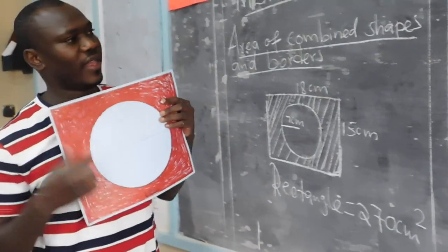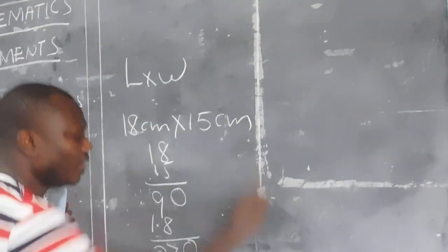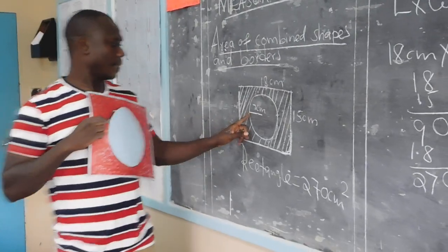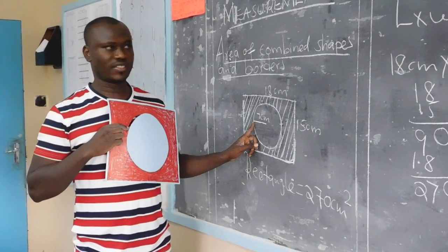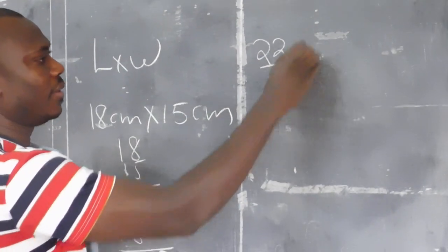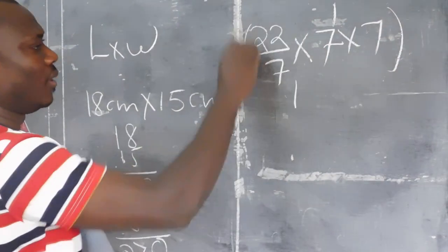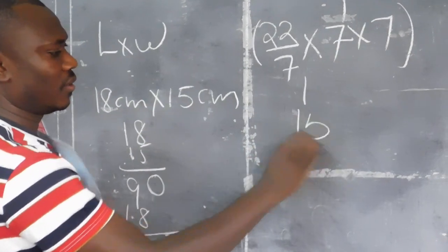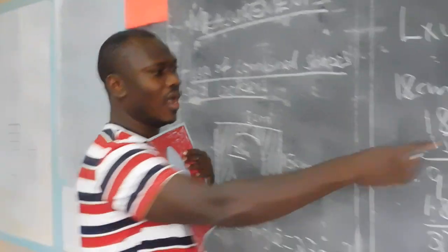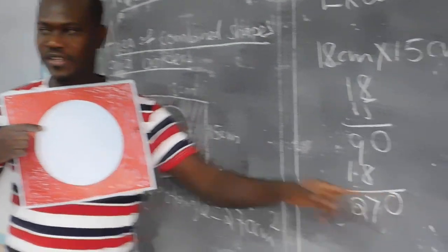To get the area of the circle we use the formula pi r squared. Pi is 22 over 7, and the radius of the circle is 7. So we have 22 over 7 multiplied by 7 by 7, which gives us 154 square centimeters. That is the area of the circle.